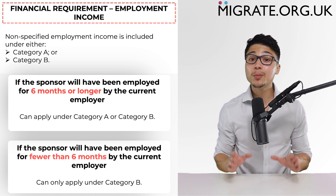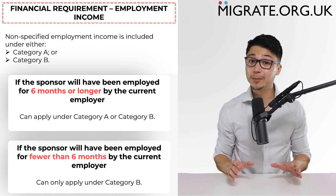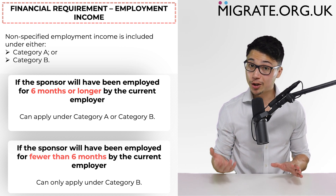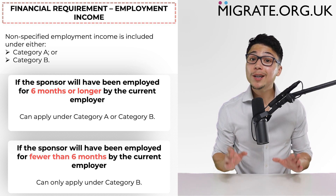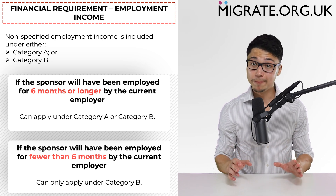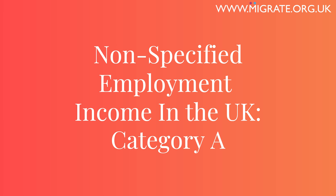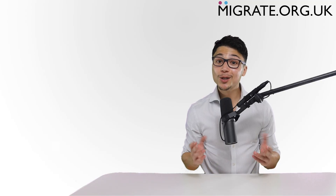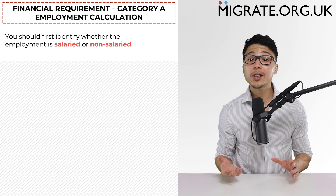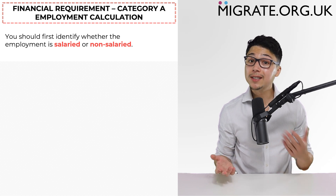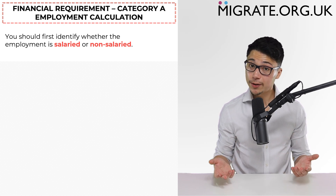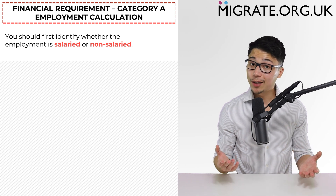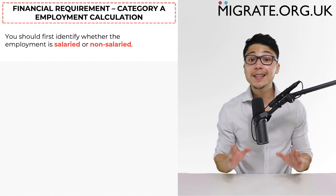If, however, the sponsor will not have been employed for six months or longer when the online application is submitted, that income can only be included under category B. We will first discuss category A, which is the category for including non-specified employment income in the financial requirement. If you're considering including your employment income under category A, the first thing you must identify is whether the sponsor is in salaried or non-salaried employment, as these are calculated completely differently.